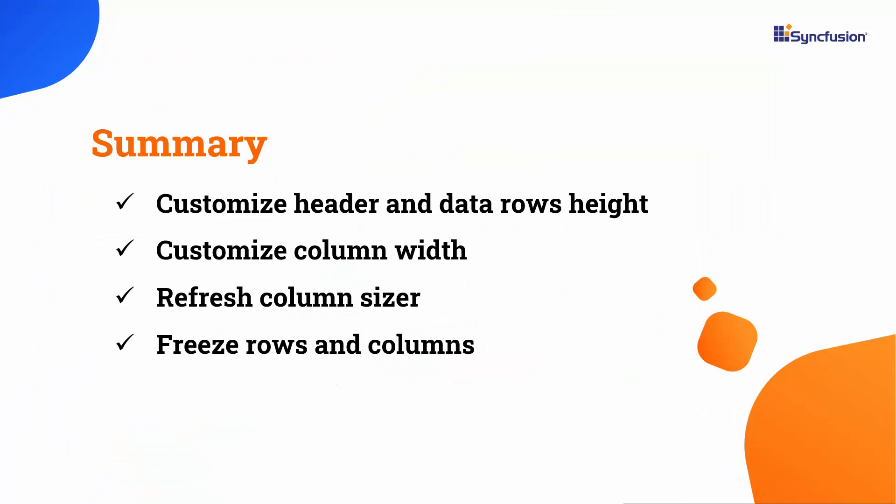In this video, I have shown you how to change the height of the header and data rows in .NET MAUI DataGrid and customize them based on their content in certain columns. I also showed you how to change the column width, how to apply column sizing for a particular column, refresh the column sizer at runtime, and how to customize auto width calculation for a column. Additionally, I showed you how to freeze rows and columns in the view. If you want to see a working example, you can download it from the GitHub link provided in the video's description. I have also included a link where you can check if you qualify for our community license, which gives you a free license key for our entire .NET MAUI control suite. If you found this video useful, don't forget to click the like button and subscribe to our channel. Thanks for watching.